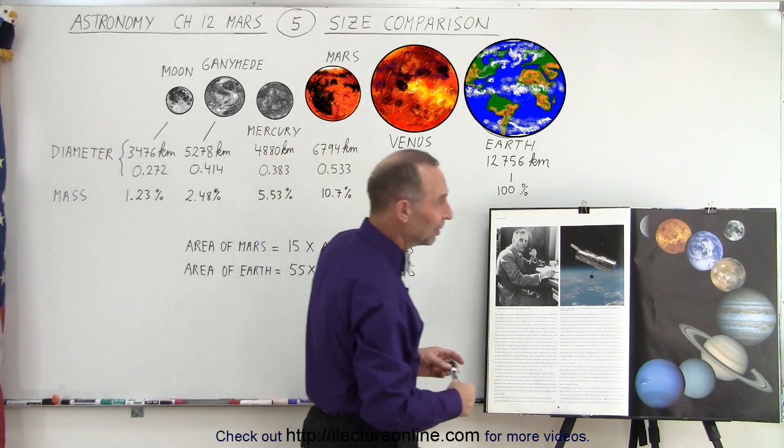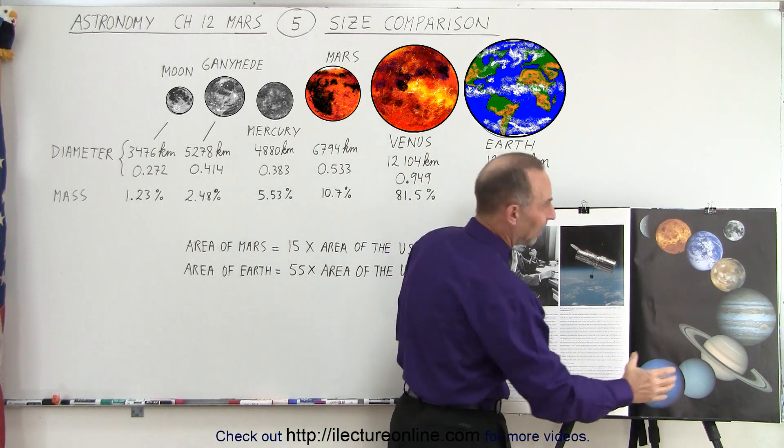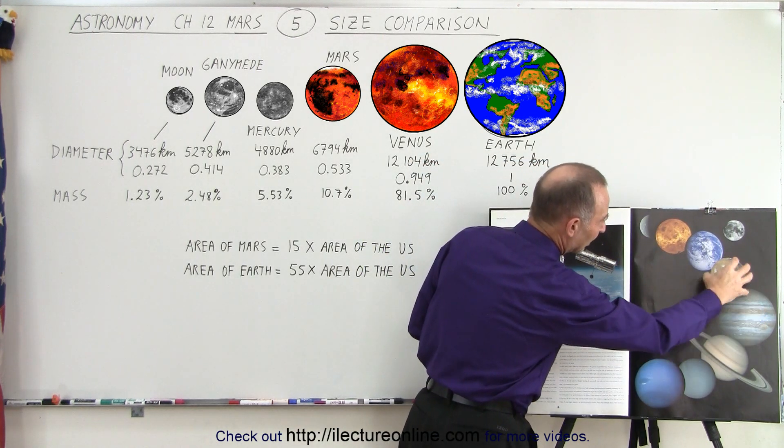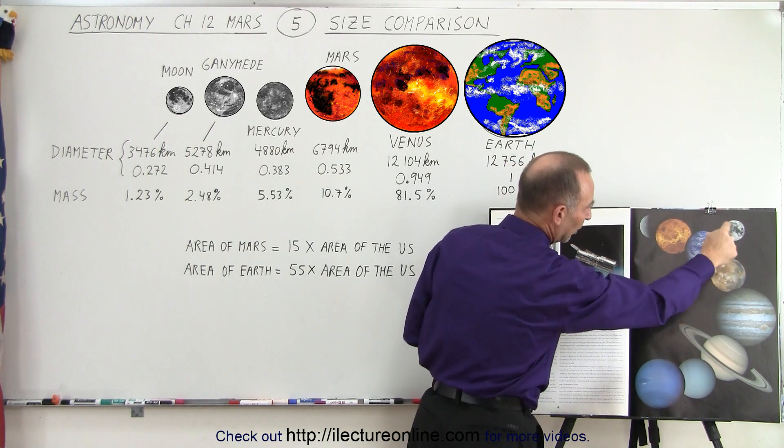Here we have a nice mosaic of the different planets in the solar system, of course, and not according to size. Obviously, Jupiter is way bigger than Mars. So here we have Mercury, Venus, Earth, and Mars, the four terrestrial planets with our Moon. Then we have the four gas planets, Jupiter, Saturn, Uranus, and Neptune.